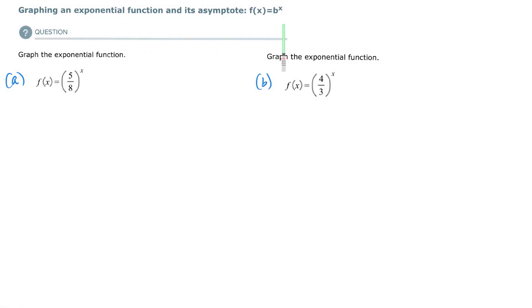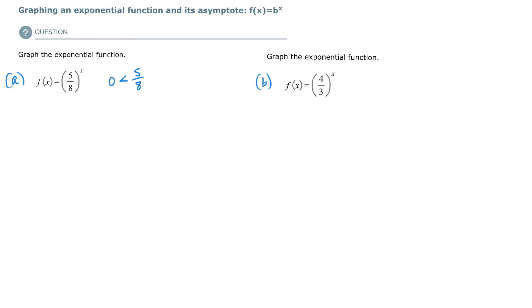Let's graph these exponential functions. This is a particular model where if the base of the exponential function is less than 1, then this will be exponential decay. Note that 5/8ths is more than 0 but less than 1, so this is going to be exponential decay. From left to right, this function is going to be decreasing.